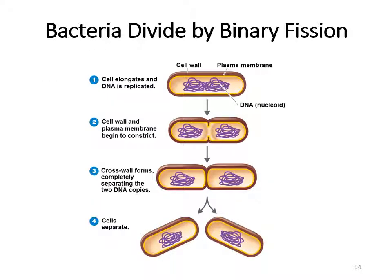When we talk about the growth of bacteria, you also have to think about how they replicate. The way that bacteria replicate is through binary fission — one cell splitting into two. Notice that before they split, before they undergo that division, they have to replicate their DNA, as we mentioned in the genetics lesson.